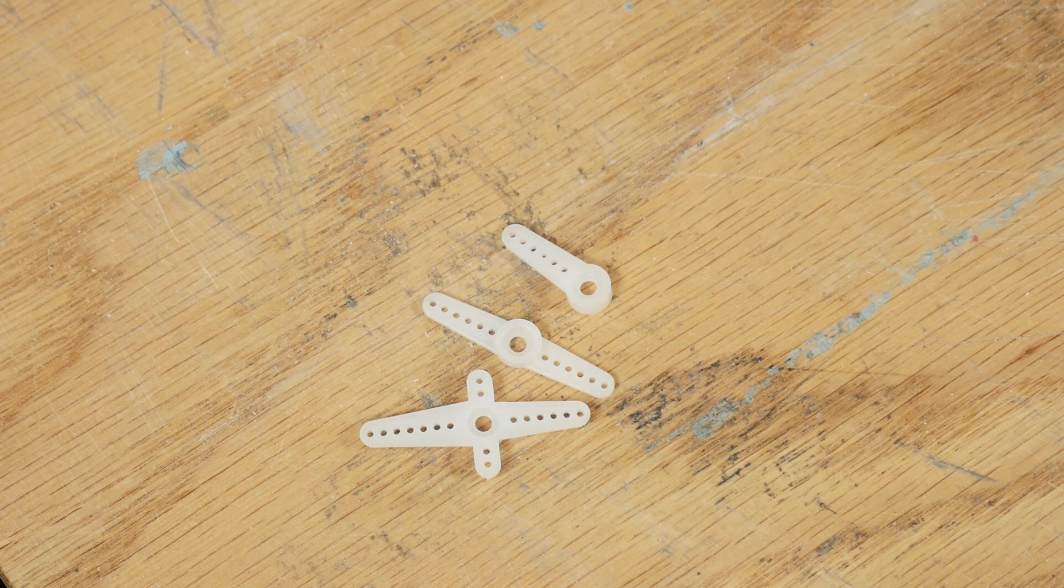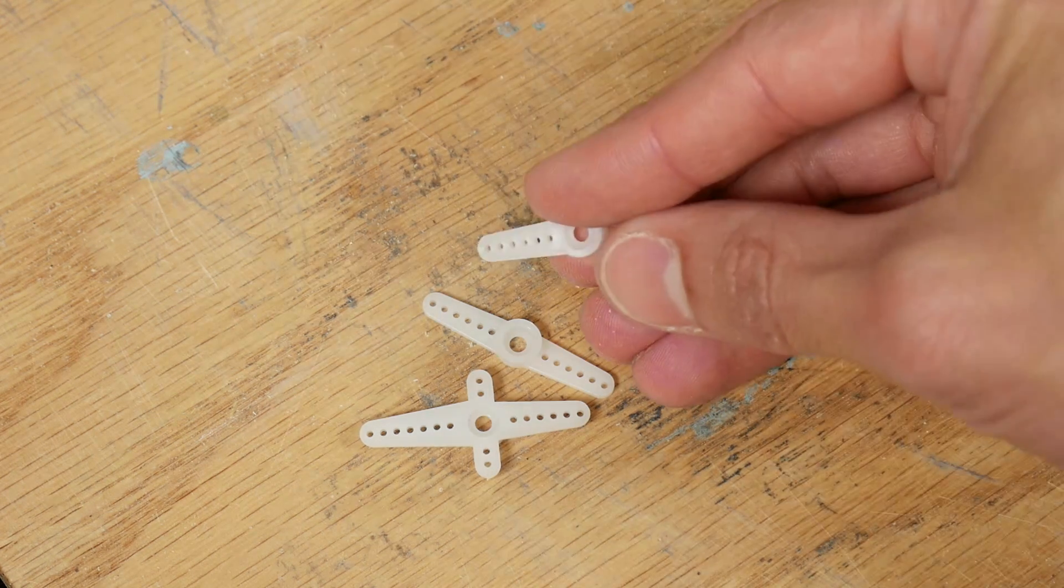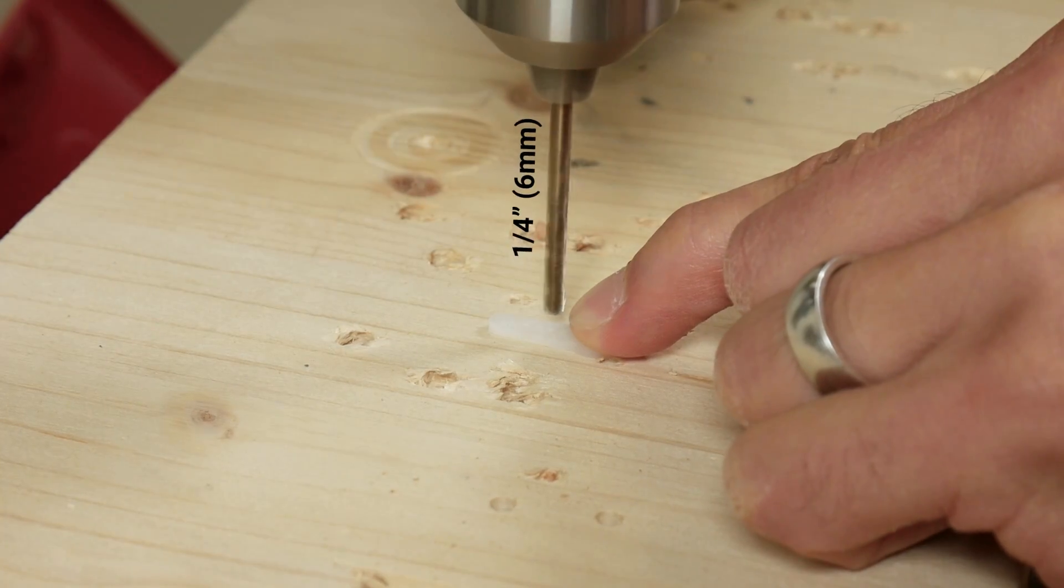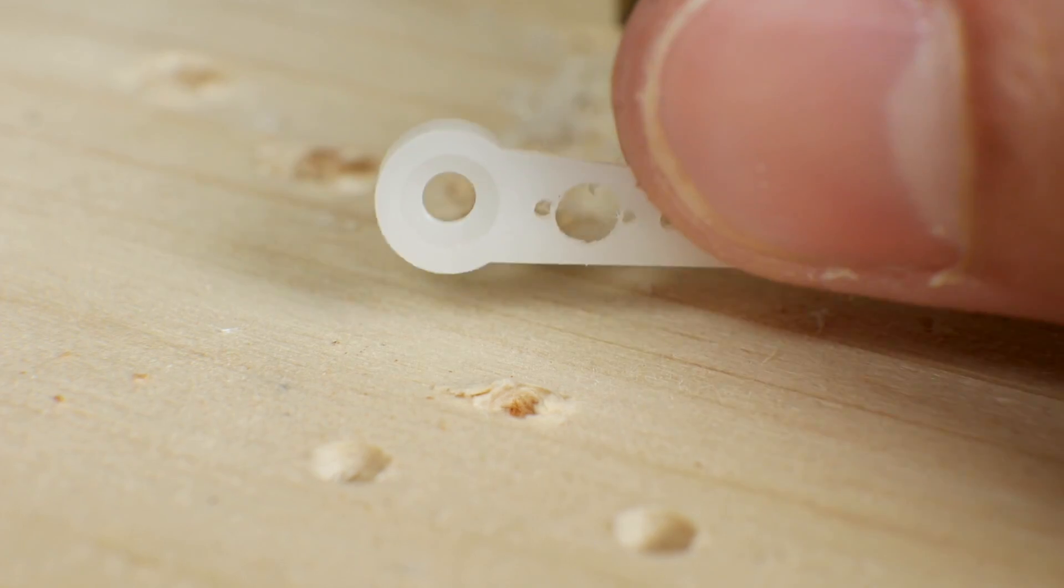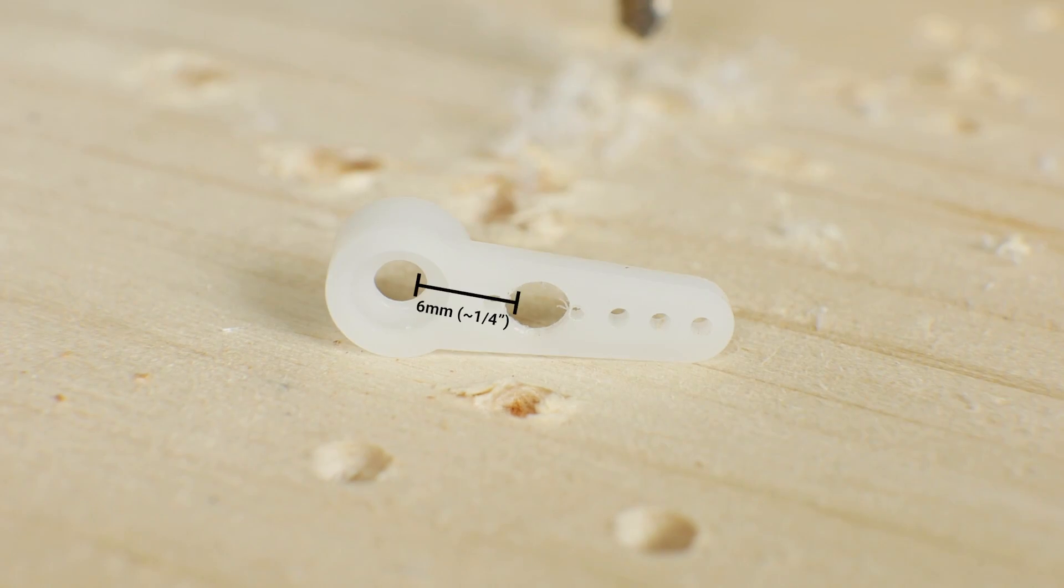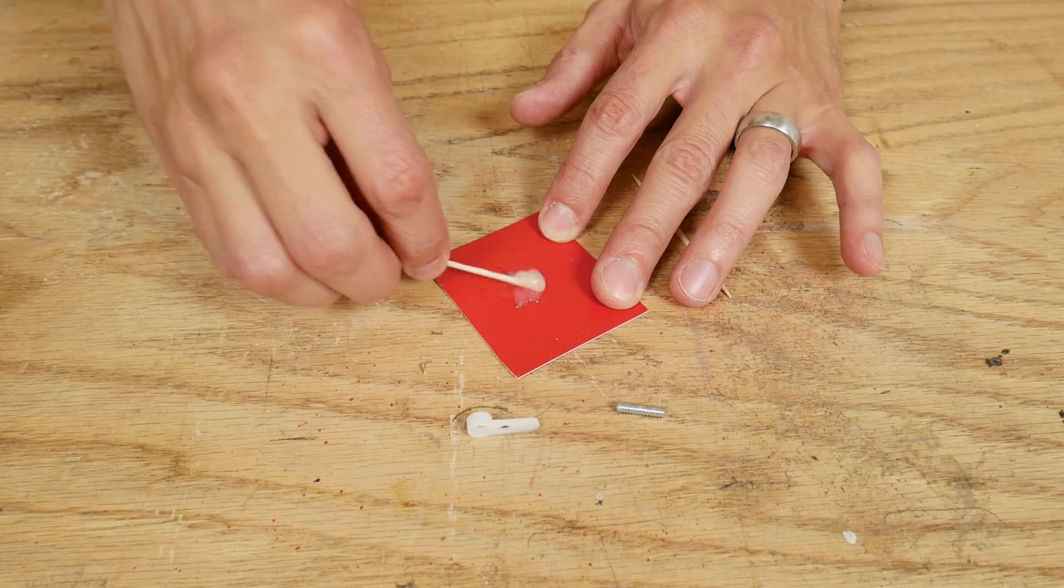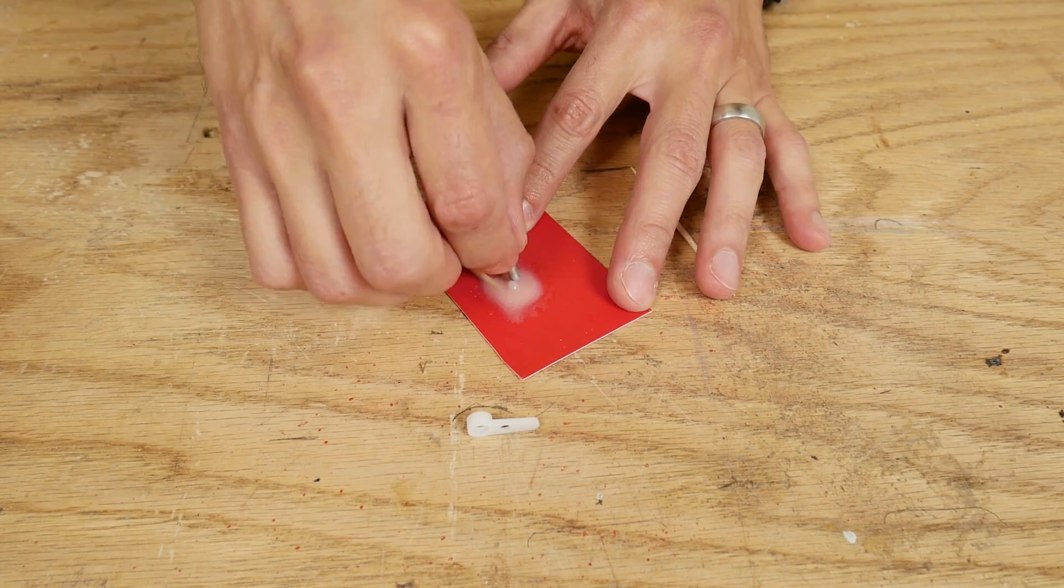This servo came with three different arms and I picked the smallest one and drilled a quarter inch hole in it. This was six millimeters from the center. I epoxied another half inch piece of threaded rod into this hole.